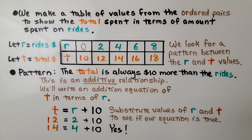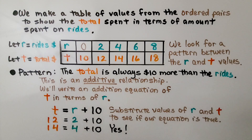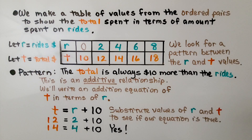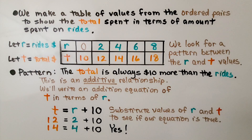We make a table of values from the ordered pairs to show the total spent in terms of the amount spent on rides. We let r equal the rides money spent and t equal the total money spent. We look for a pattern between the r and t values: 0 and 10, 2 and 12, 4 and 14. The pattern is the total is always $10 more than the rides — this is an additive relationship, always plus 10. We write an addition equation: t is equal to r plus 10.